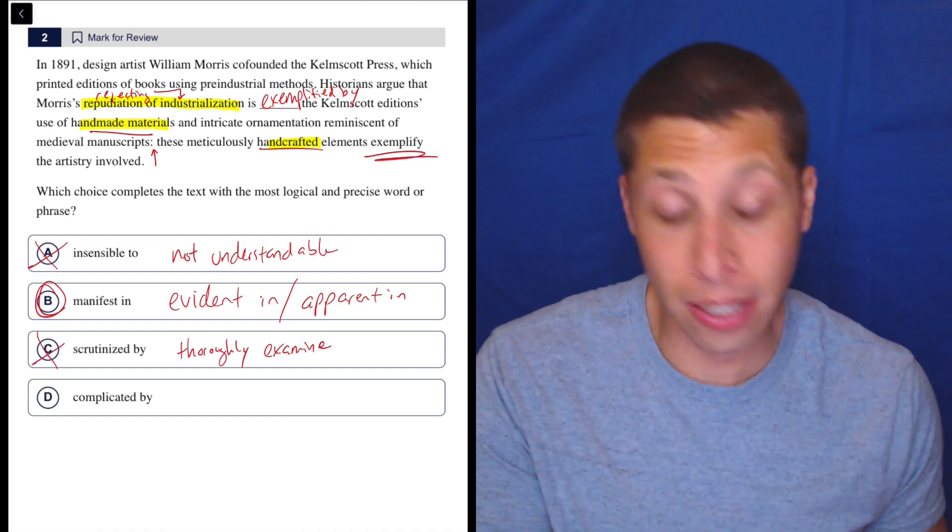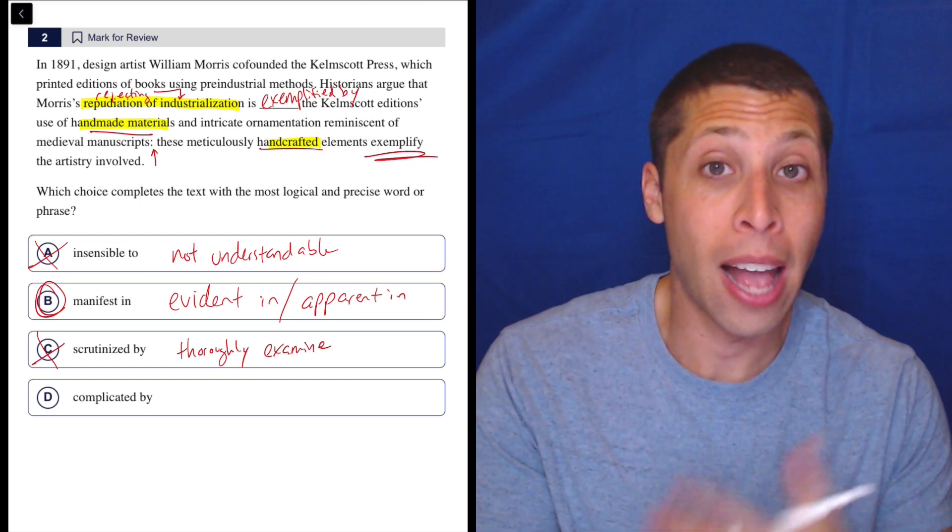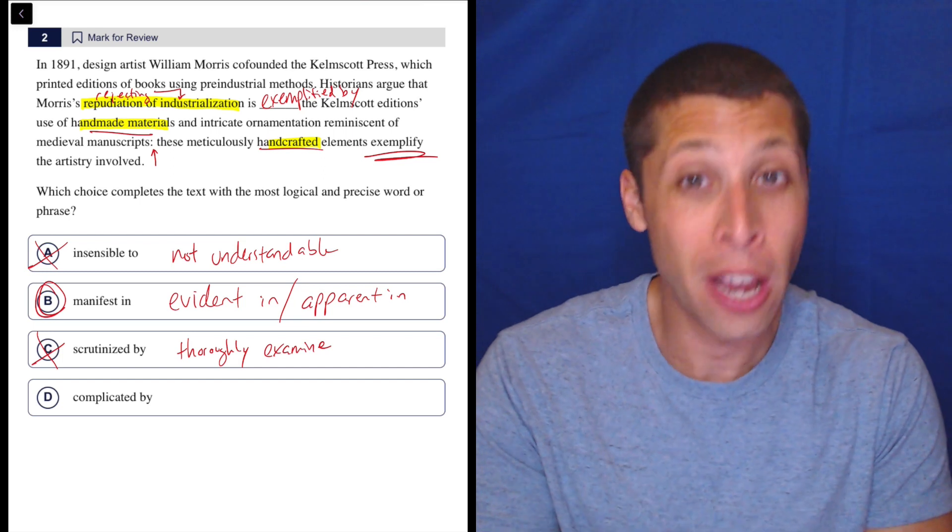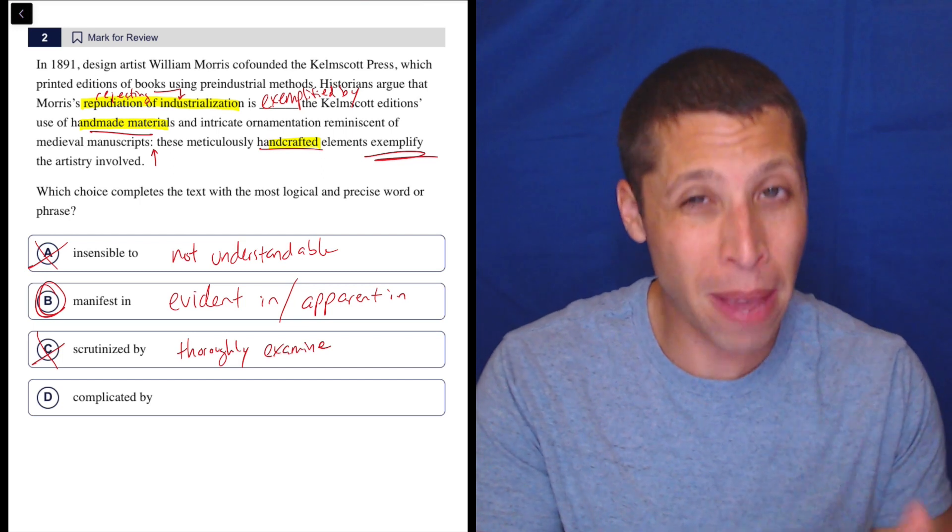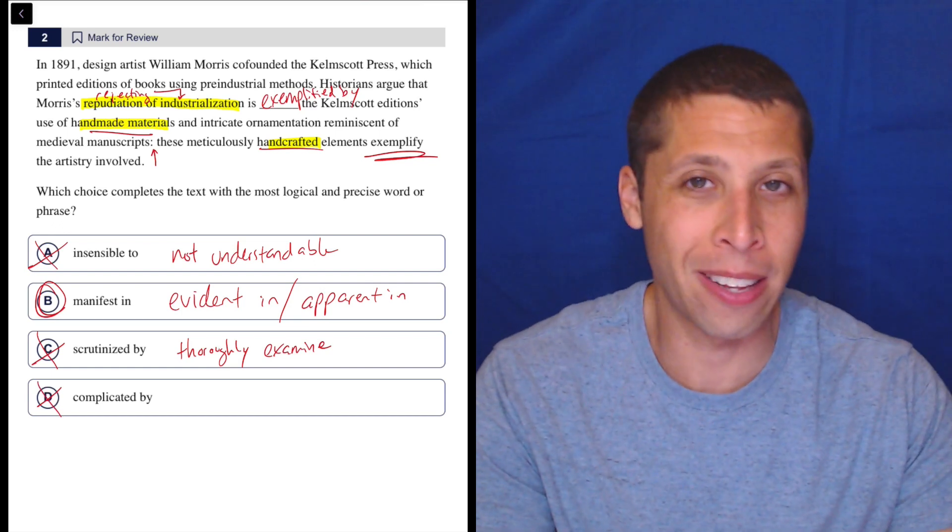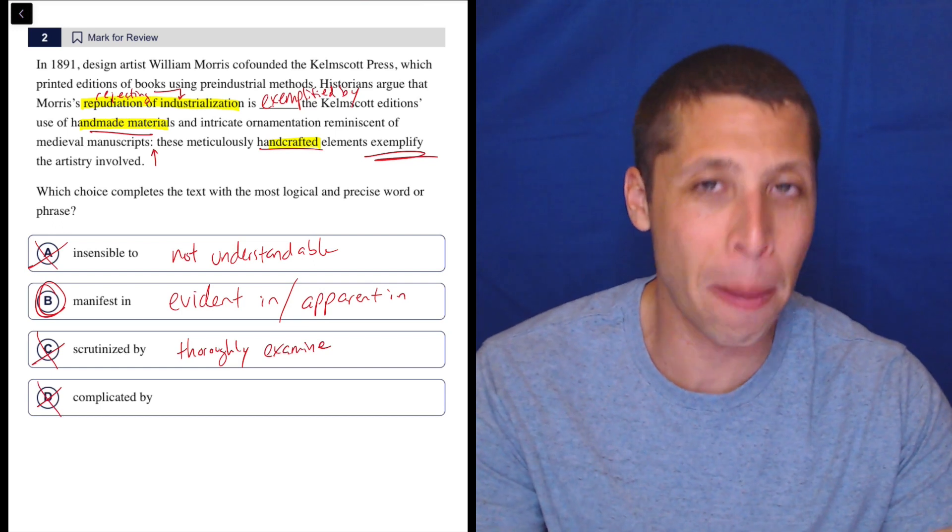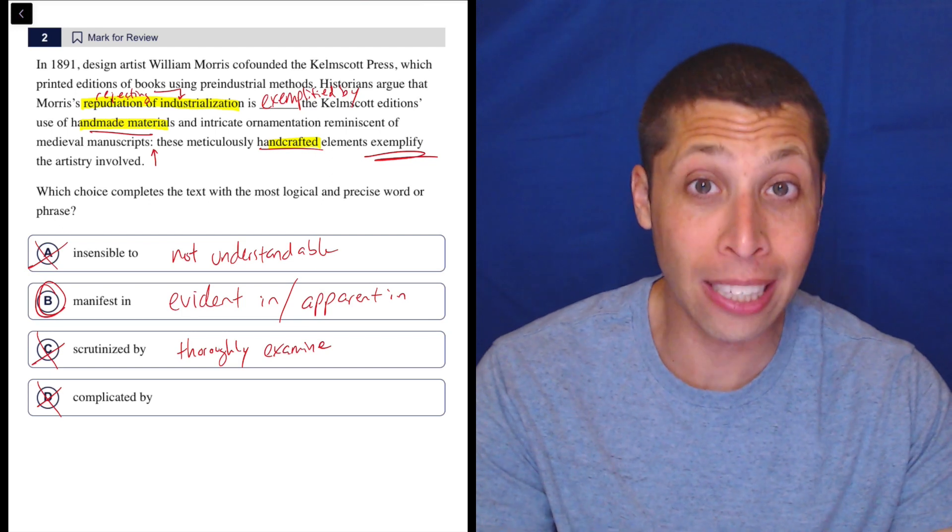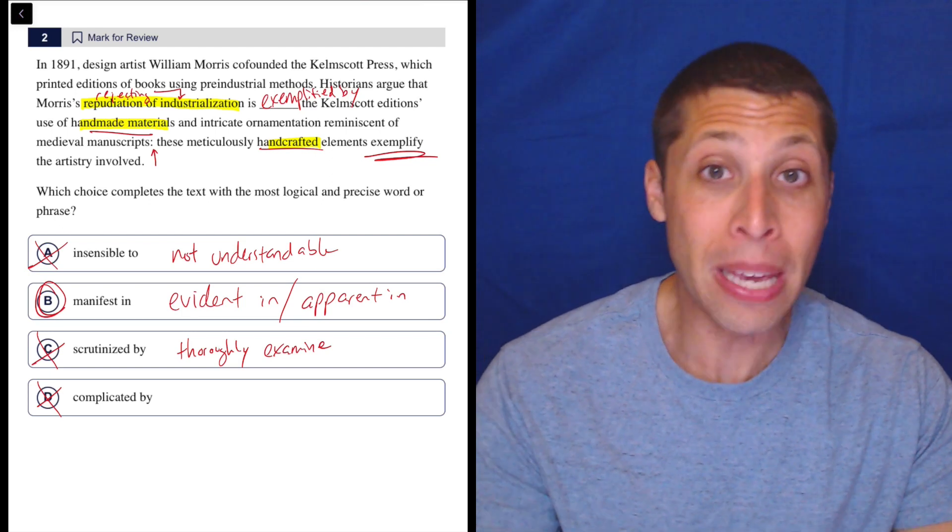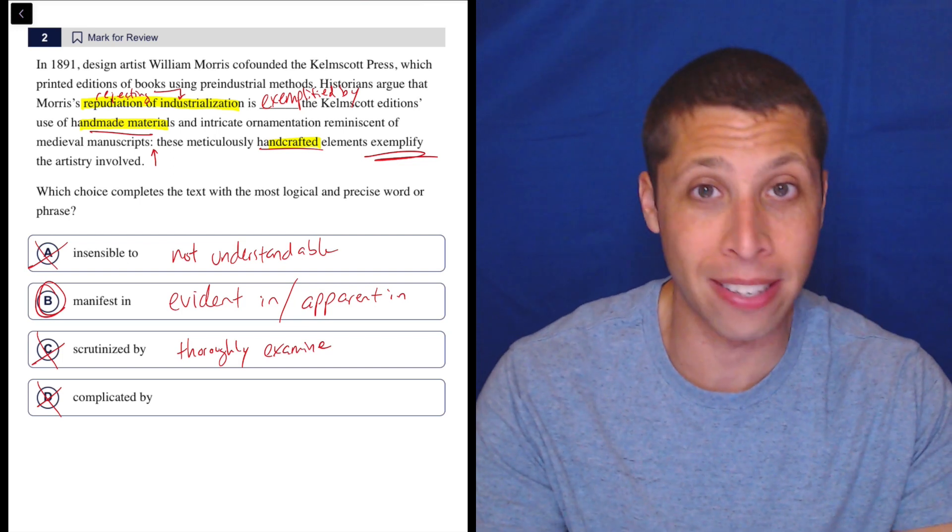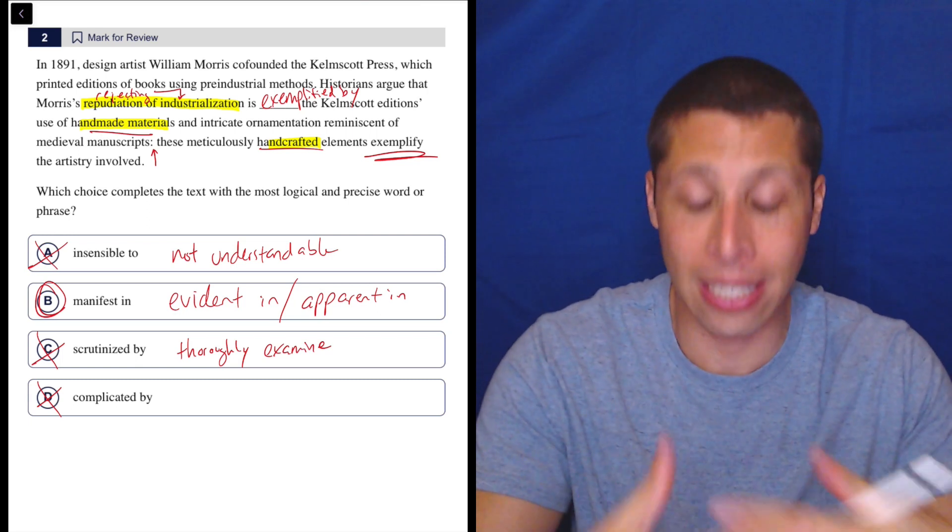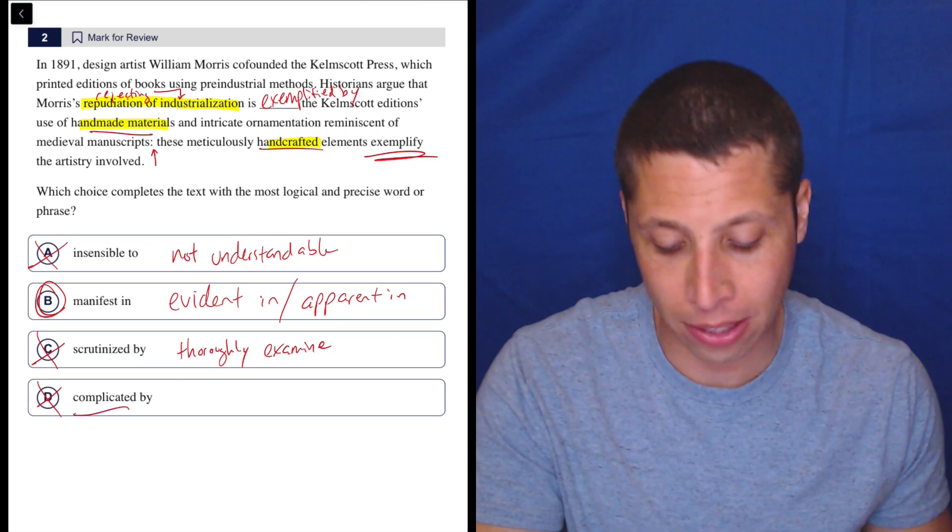And then complicated is probably what you're going to pick if you're just not understanding at all how these hard questions work. You can't just pick the easy word when you don't know anything else. Does it make sense to say complicated by here? Like if it doesn't make sense, get rid of it. If anything, it's the opposite. It's not complicated by this. It's very clear that this guy doesn't like industrialization because of these editions. It's not complicated by these editions. The editions show the thing. They're linked. So this is almost making it into an opposite. So it doesn't make sense.